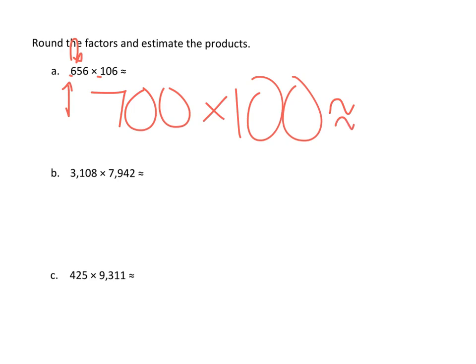So I'm just going to do my little trick here. 7 times 1, 7. And 1, 2, 3, 4 zeros. Put my comma in. 700 times 100 is 70,000. So my 656 times 106 is about 70,000.